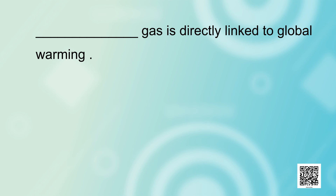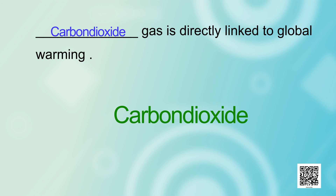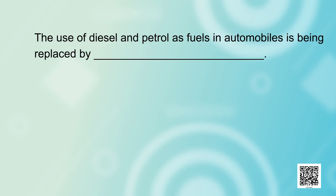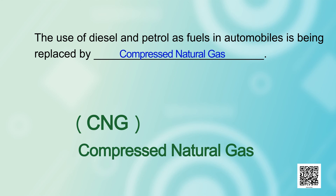Here are some fill-in-the-blank questions. Which gas is directly linked to global warming? The answer is carbon dioxide gas. The use of diesel and petrol as fuels in automobiles is being replaced by which gas? That is CNG — compressed natural gas. It has replaced diesel and petrol as fuels in automobiles as it is a cleaner fuel.